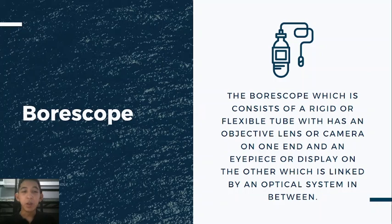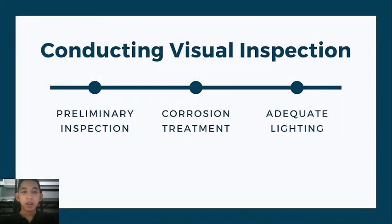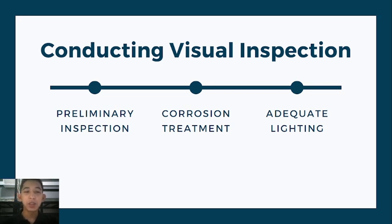Now we know what visual inspection is, where and when it is used, and the tools to aid it. But how do we conduct visual inspection? Here are the steps. First, we do a preliminary inspection of the overall general area for cleanliness, presence of foreign objects, deformed or missing fasteners, security of parts, corrosion, and damage. You can already use the tools mentioned earlier if needed.